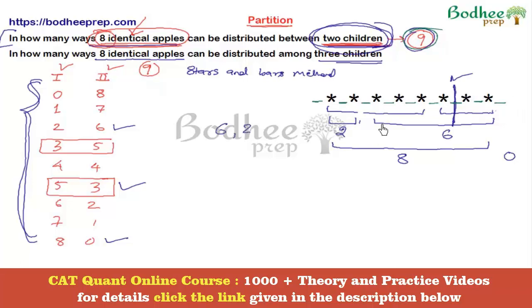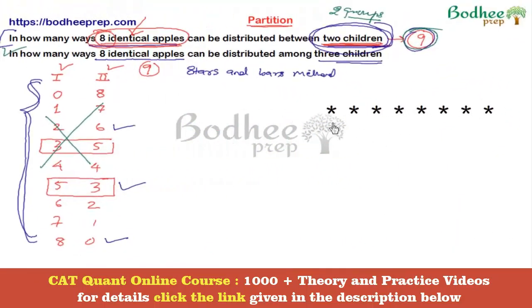The logic of stars and bars is clear: we use a partition or bar to divide the identical items into groups. Since we need two groups, only one bar is needed. Now applying this method directly to question two — distributing eight identical apples among three children — we need three groups, so we need two bars. The number of bars required is always one less than the number of children.